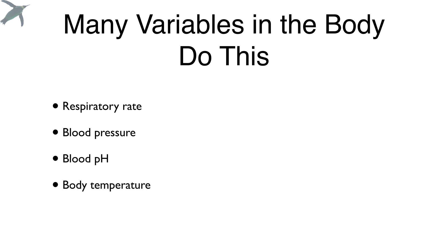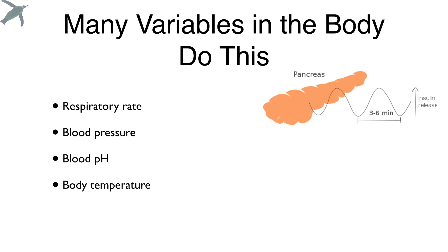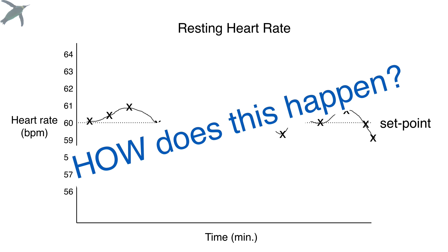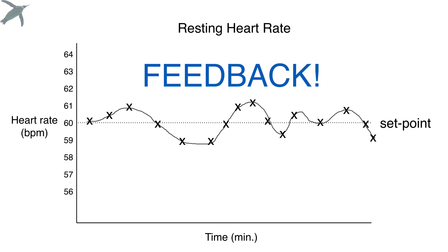Lots of variables in the body oscillate — go back and forth — just like this. Even things like secretions: the pancreatic secretion of insulin oscillates every three to six minutes. Body temperature, which we're going to look at, goes up and down around a set point value. And hopefully now you're thinking: how does this happen? That's what feedback is all about — that's the connection between homeostasis and feedback.